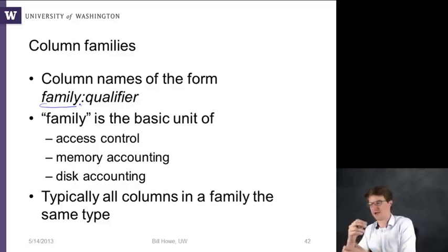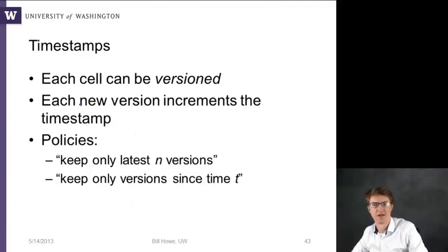And so they make this point that typically all columns in a family are the same type, which I find a little unusual because they sort of talk about it being the basic unit of access control, which suggests that there's things that go together for access control, sort of social security number and employee ID or something, may or may not be the same type. So there's sort of a logical grouping requirement that they seem to be trying to meet, but then they have to be the same type, which is for a very technical reason, specifically because they want to compress these things. So if you have a whole bunch of integers, it's easier to compress than if you have a mix of integers and strings. Okay. So I think they're trying to kill too many birds with one stone here.